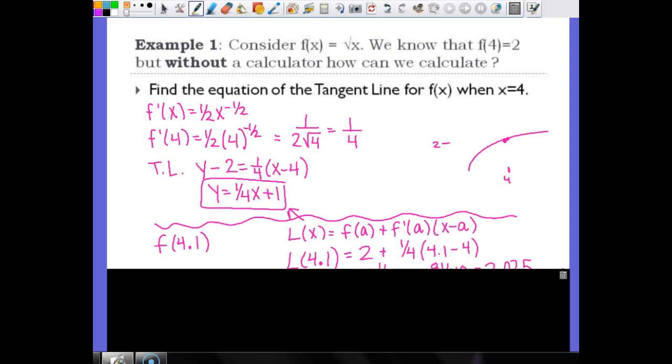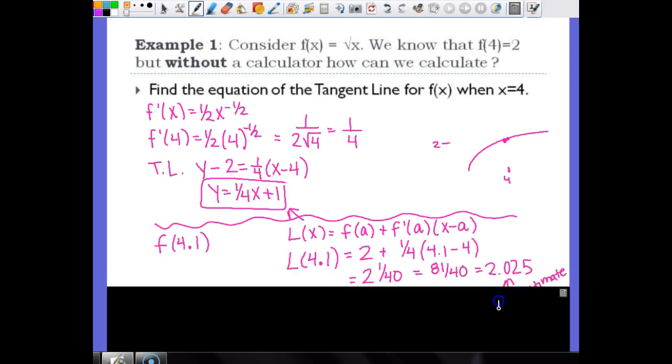So 0.1 as a fraction is 1/10. So 1/10 times 1/4 is 1/40. So 2 + 1/40 is 2 and 1/40.